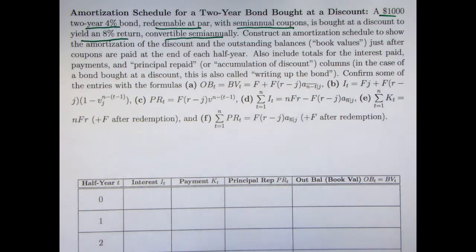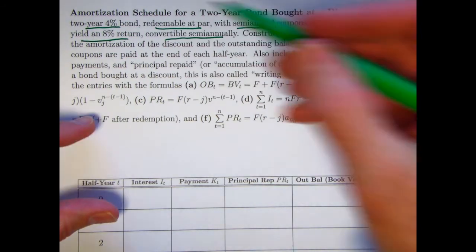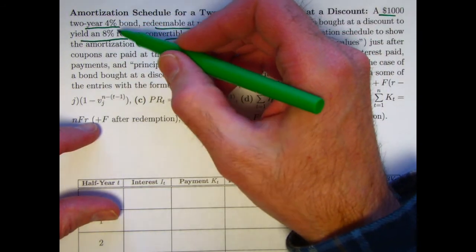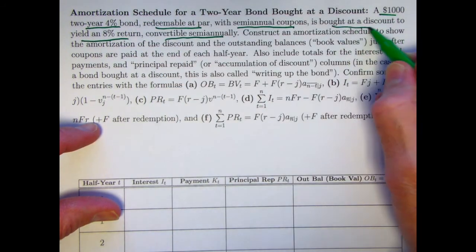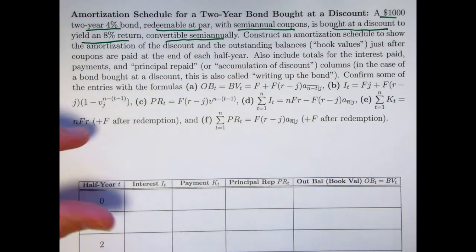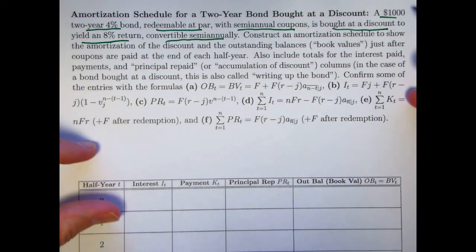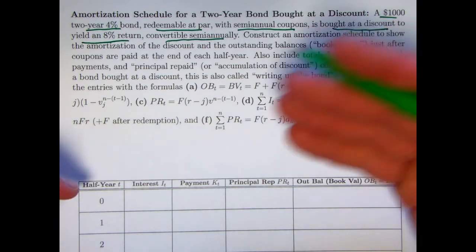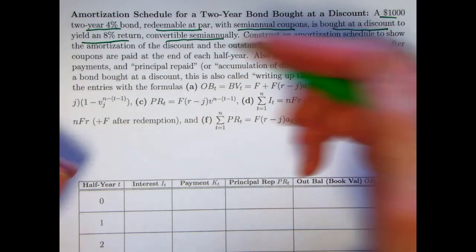When a bond is redeemable at par and the coupon rate is lower than the yield rate, then you're going to end up buying it at a discount. You'll pay less than the face value, the redemption, which is the same as the redemption value here. And again, that sounds good, but your coupons are going to be kind of low here. It's a low coupon rate.